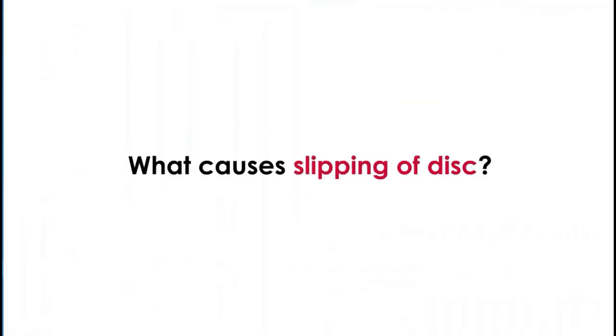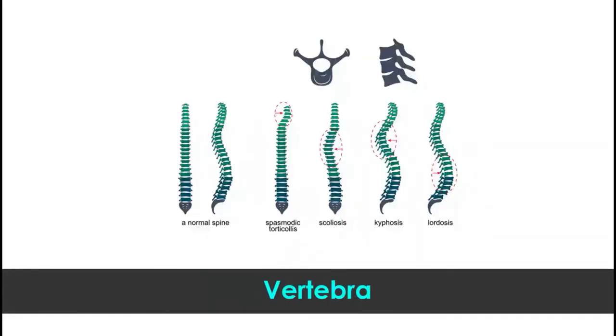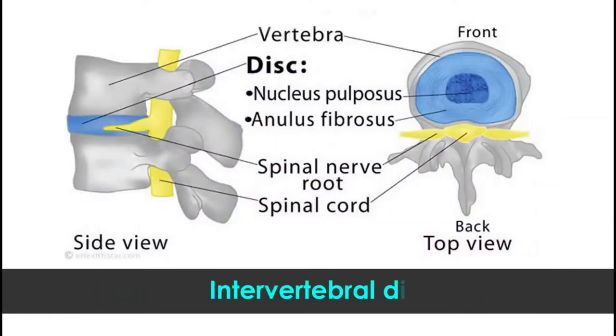What causes slipping of the disc? You can imagine this disc — our back vertebral column is made up of a number of small bones which are known as vertebra. In between two bones, there is a soft cushion-like material which is known as an intervertebral disc. This disc acts as a cushion, and this cushioning is important.